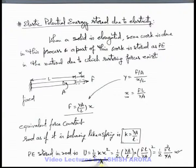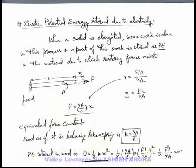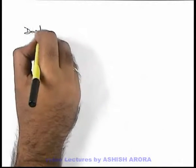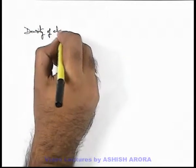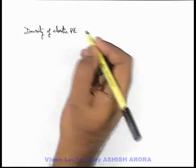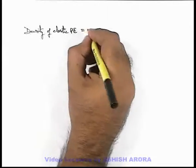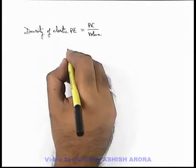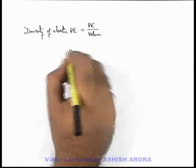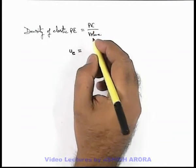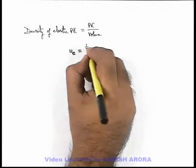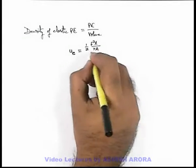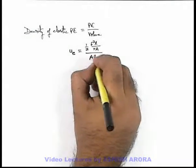We can also calculate the energy density in the material of the rod, as the whole energy is stored within its volume only. The density of elastic potential energy in the material is defined as potential energy stored divided by the volume of material, expressed by the symbol u_e. The potential energy is half F²L/YA, divided by the total volume of the rod which is AL.